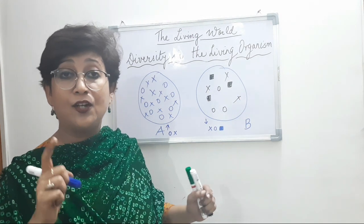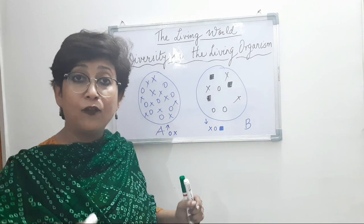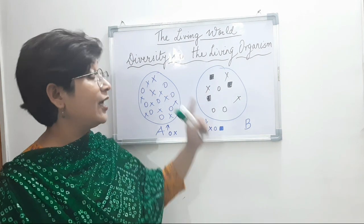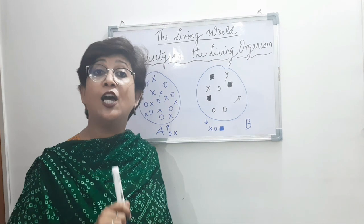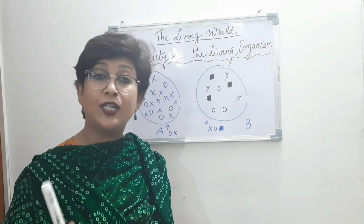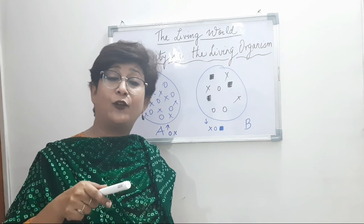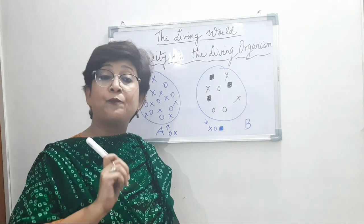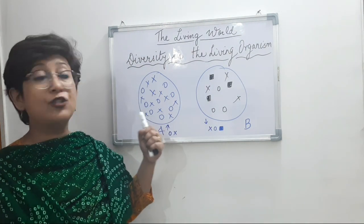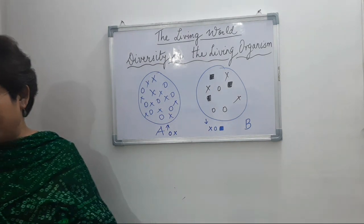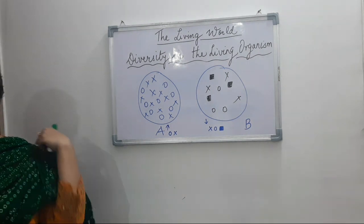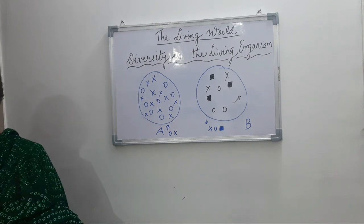When we talk about biodiversity, we do not talk about the total number of living organisms — we talk about the different species, the variety of living organisms. So when we talked about 1.7 to 1.8 million, we were referring to 1.7 to 1.8 million species that have been studied, not the total population. That is about biodiversity — the variety of living organisms found in a geographical area.